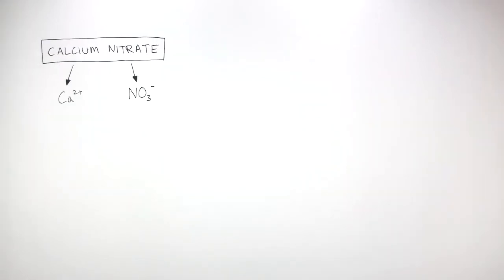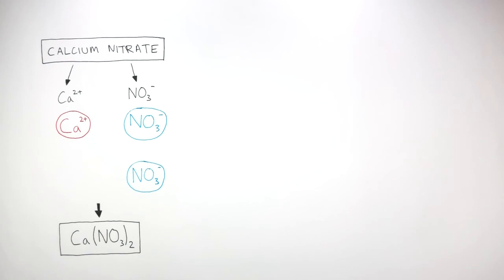Pause the video to figure out the chemical formula of calcium nitrate. Calcium is in group 2, so it always has a charge of 2+. Nitrate ions always have a charge of 1- and the formula NO3-.